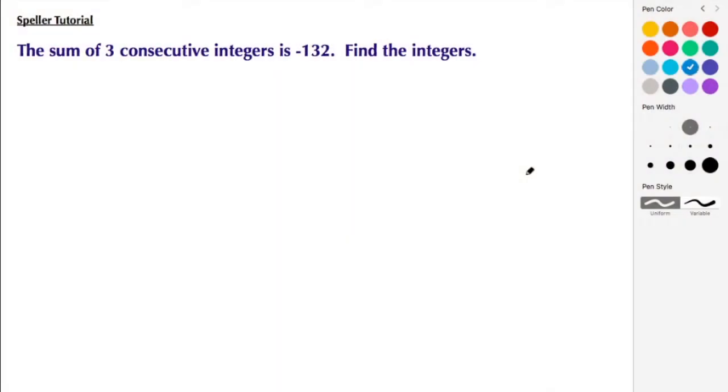Welcome back to Spoiler Tutorial Services. In today's tutorial, we're going to solve a word problem. The sum of three consecutive integers is negative 132, and we need to find the integers.